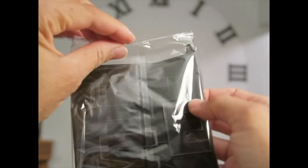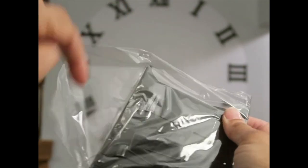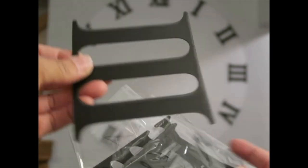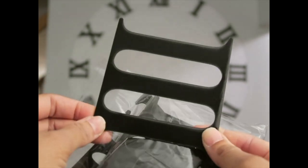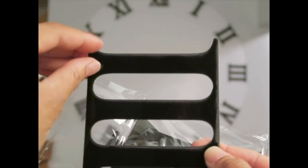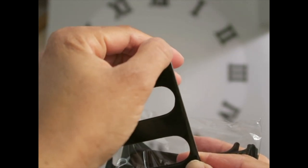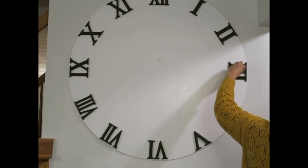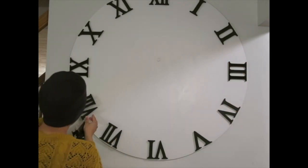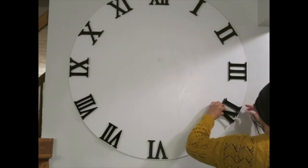The set also came with these metal covers that go right over each of the numbers. So instead of having the foam look, it'll have more of a metal look. So I'm just going to add those now. And then it has a little plastic seal that needs to be peeled off of each one.